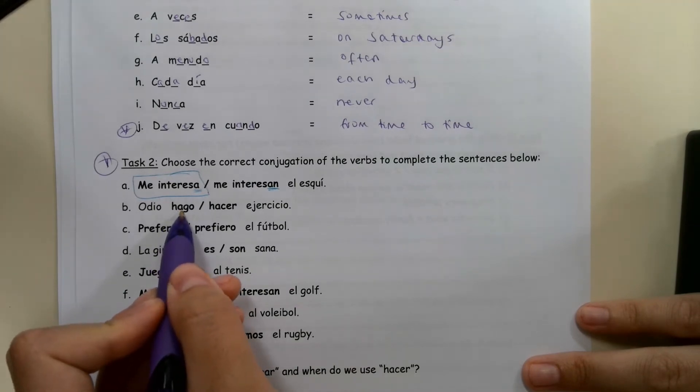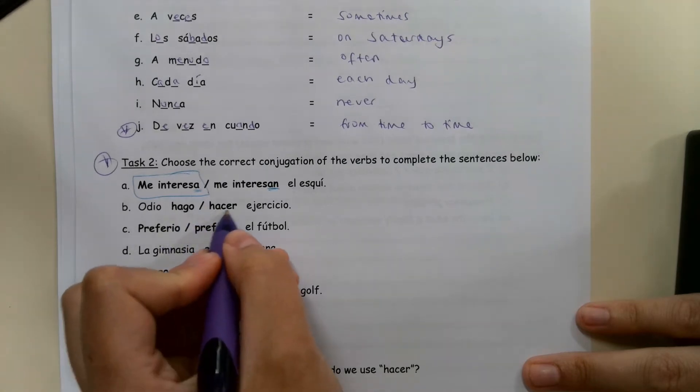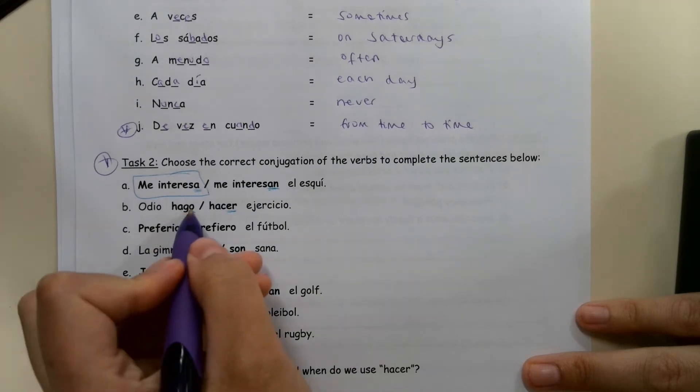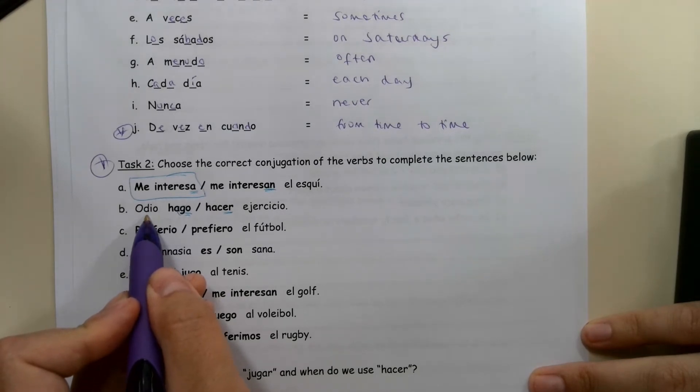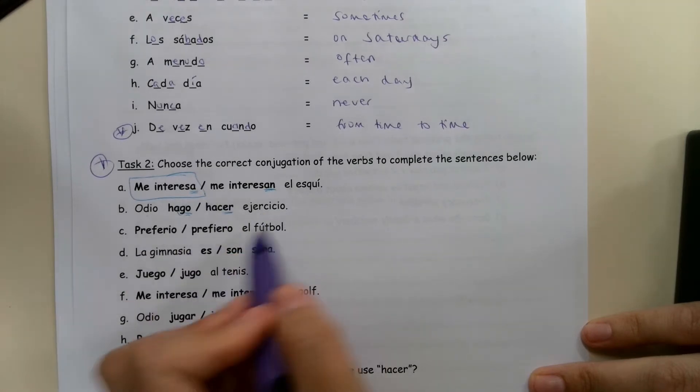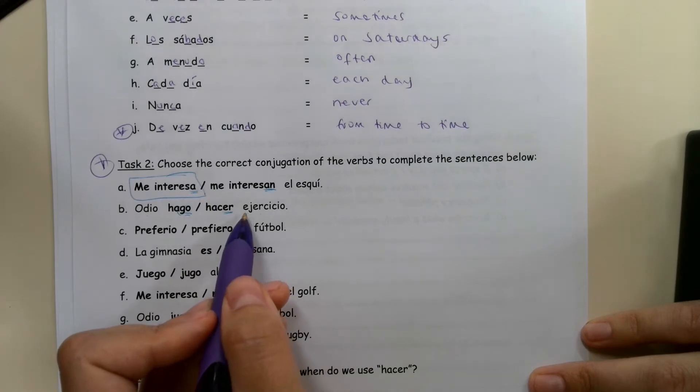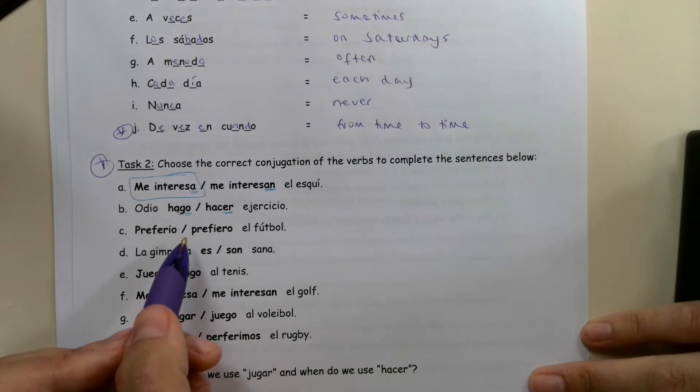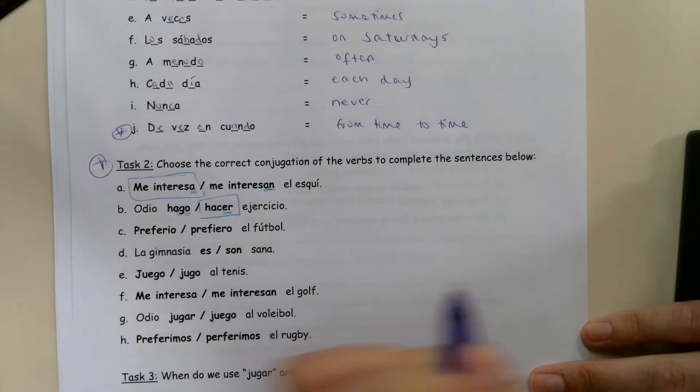Hago means I do, and hacer means to do. We know that means to do because it's got an ER on the end. We know this one is I do because it's got an O on the end, and it's slightly irregular. Odio means I hate, and ejercicio is exercise. So we need to have some understanding of the sentence to know which one to choose. So we've now got to look at which one makes more sense. I hate, I do, exercise doesn't make any sense. But I hate to do exercise does make sense. So we're going to choose that one.